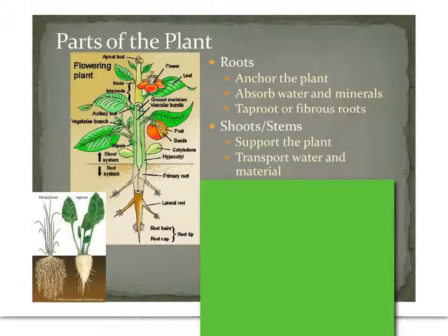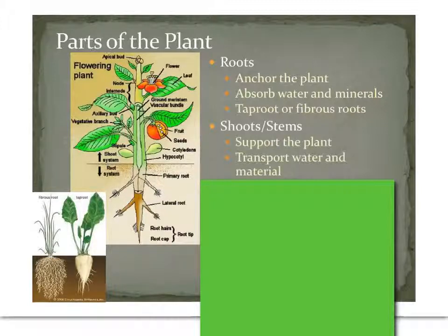As we move up, we come to the shoot or the stem of the plant. This is the part that supports most of the plant, and its main job is transporting water and material from the roots and the leaves back and forth, up and down.